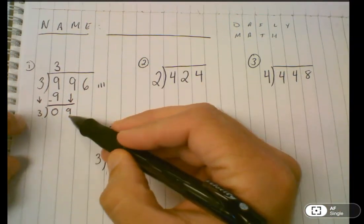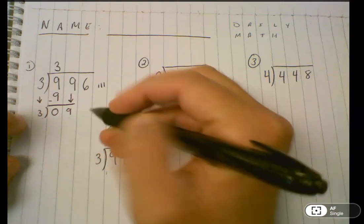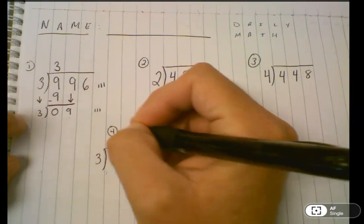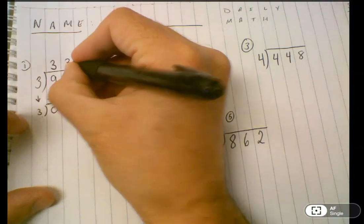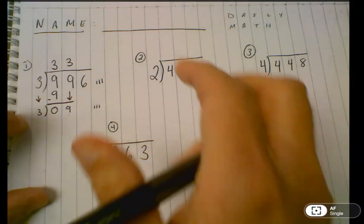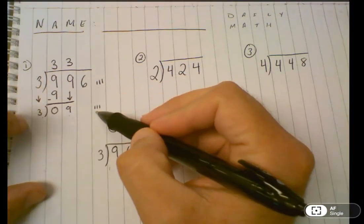Again, you're skip counting by three until you get close to nine. Once again, it's three. And I put that three, that piece of my quotient, in the tens. And three times three is nine again.